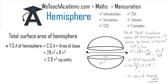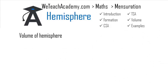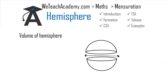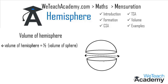Coming to the next section, we will discuss the volume of a hemisphere. The volume of a hemisphere is equal to half of the volume of the sphere, since a hemisphere is formed by dividing the sphere into two equal parts. Thus, volume = 1/2 × (4/3)πr³, giving us the formula: volume of hemisphere = (2/3)πr³ cubic units.